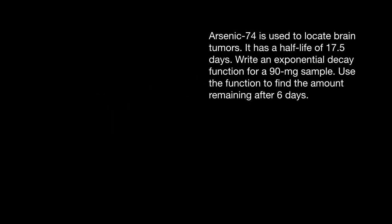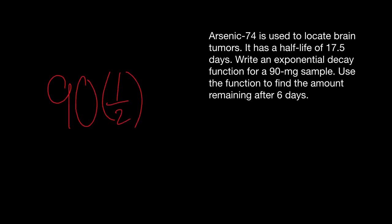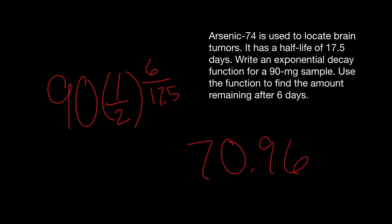Arsenic-74 is used to locate brain tumors. It has a half-life of 17.5 days. Write an exponential decay function for a 90-milligram sample, then use it to find the amount remaining after six days. The function is 90 times 0.5 to the t over 17.5. Plugging in six days: 90 times 0.5 to the 6 over 17.5 — we will not have a full half taken out, so there will still be approximately 70.96 milligrams remaining.